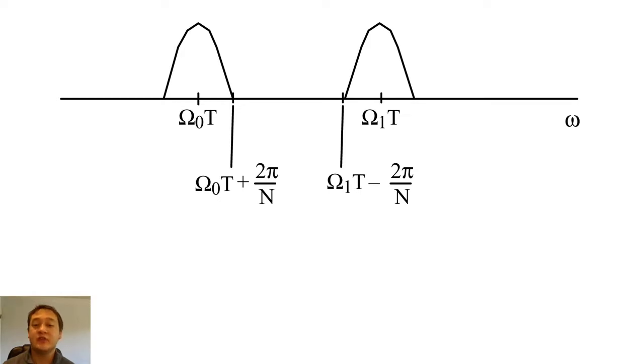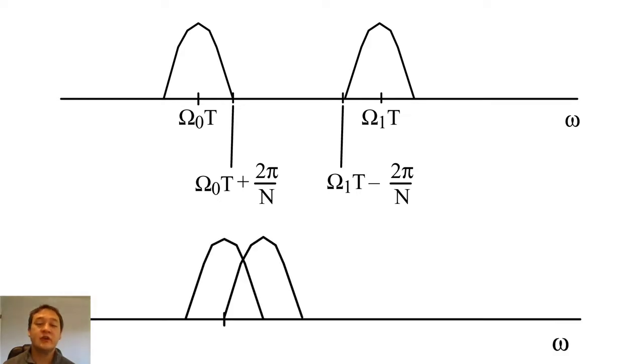If these cosines are too close in frequency, their main lobes will overlap significantly. Since the DFT will add these main lobes together, we will not be able to distinguish the two cosines from each other if their frequencies are too similar.